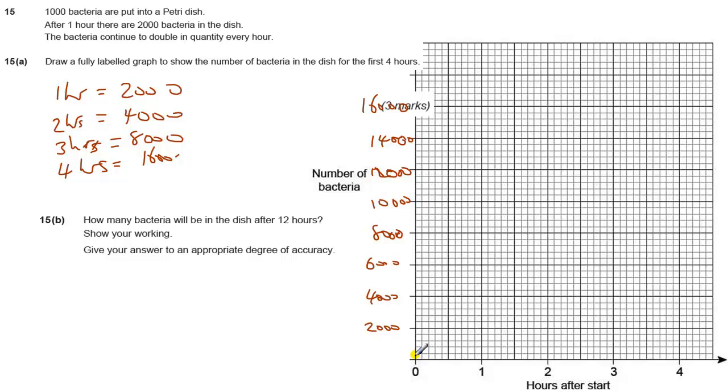Then we can plot our graph. It starts with 1000 bacteria, so it starts here. After one hour, we have 2000. Two hours, 4000. Three hours is 8000. And four hours is 16,000.